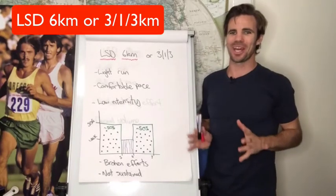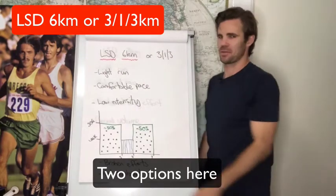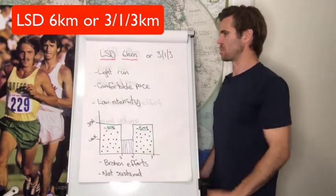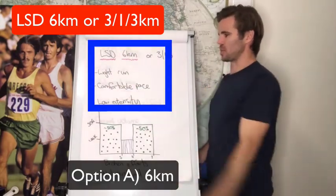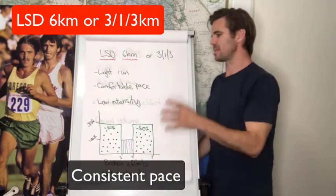Hi guys, welcome to the long run of six kilometers or three-one-three as your B option. If you choose the A option of a six kilometer long run, let's go with our usual light, easy pace.